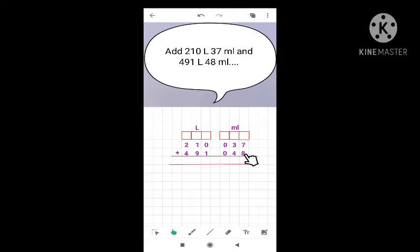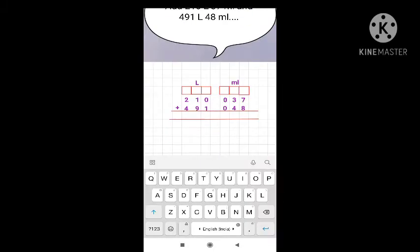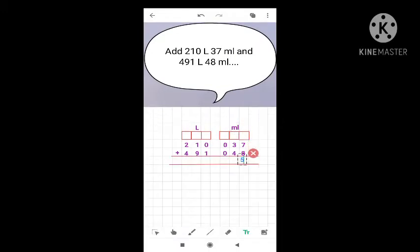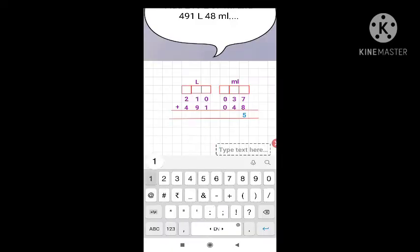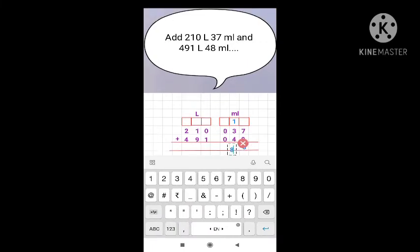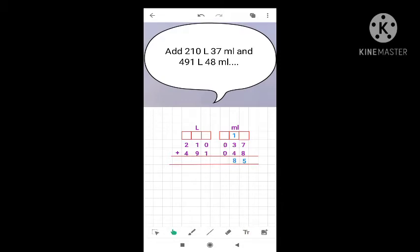Now let's add them. Always start from here. 8 is greater than 7. So keep this 8 in your mind and 7 in your finger boxes. When we add we get 15. So here we have to write 5 and 1 will go here. Now we have to add these three values. So add 1, 3 and 4. Now we get 8. Here nothing to add, so just write 0 here.